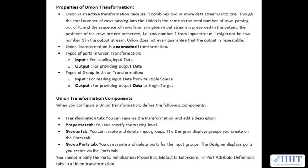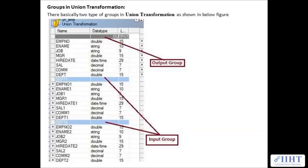Union Transformation components: when you configure Union Transformation, define the following components. In the Transformation tab, you can rename the transformation and add a description. In the Properties tab, you can specify the tracing level. In the Groups tab, you can create and delete input groups — the designer displays groups you create on the port tab. In the Group Port tab, you can create and delete ports from the input groups. There are basically two types of groups: the output group and the input groups.